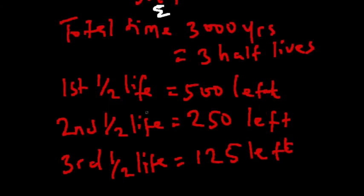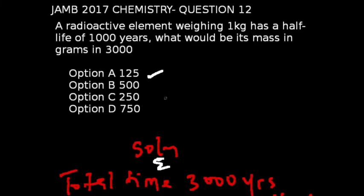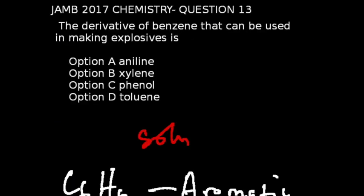For the first half-life we have 500 grams of the original value which was 1,000. For the second half-life we have 250 of 1,000 left. And for the third half-life we have 125 of the original value left. So that simply corresponds to option A.